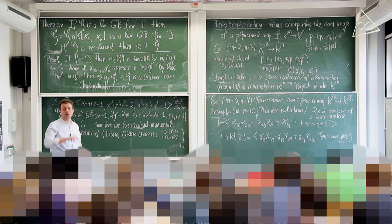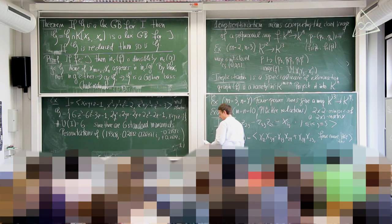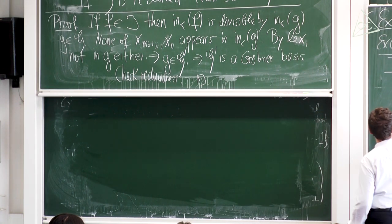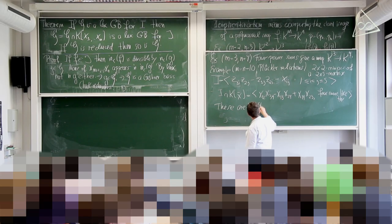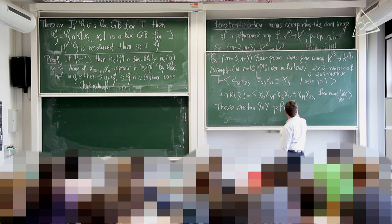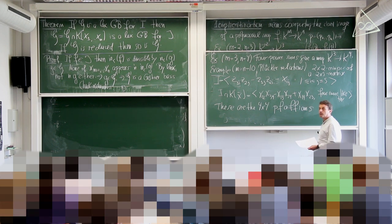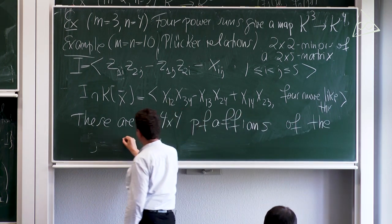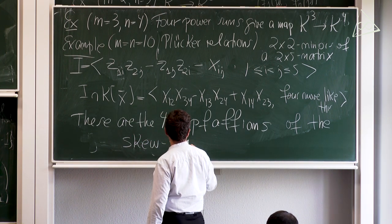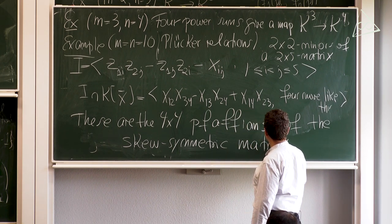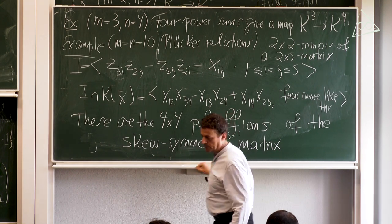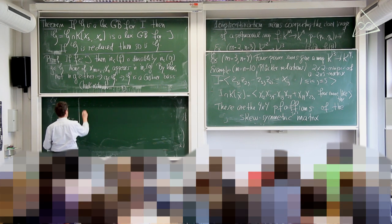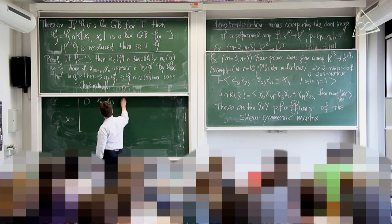These relations are so-called Pfaffians — specifically the four-by-four Pfaffians of a skew-symmetric five-by-five matrix X. A Pfaffian is related to a principal sub-determinant of a skew-symmetric matrix: the determinant of a skew-symmetric matrix of even size is the square of a polynomial called the Pfaffian. Skew-symmetric means the matrix equals minus its transpose, so there are zeros on the diagonal.